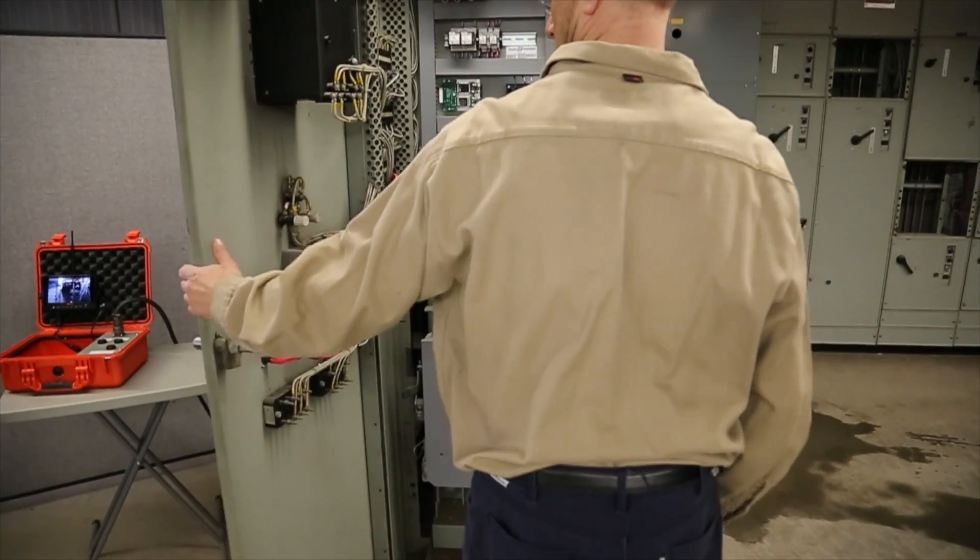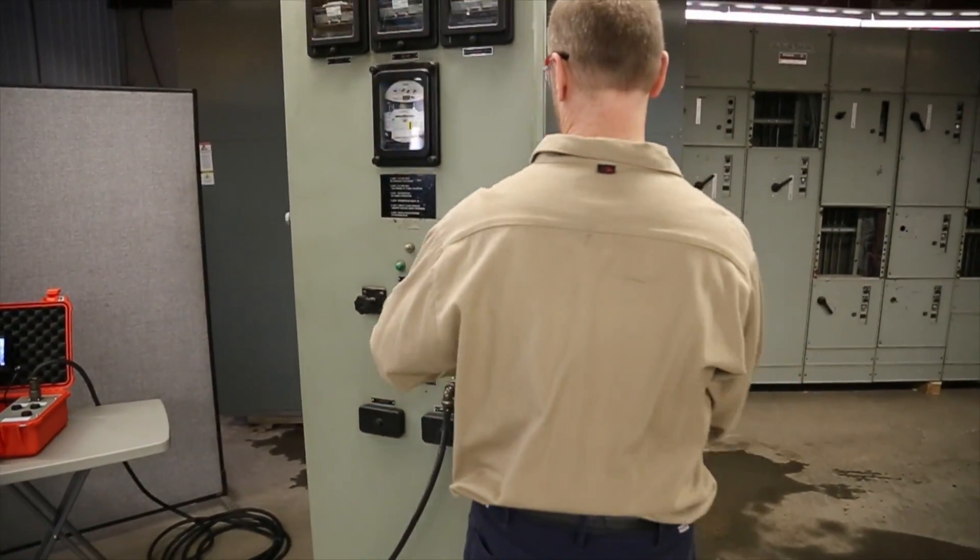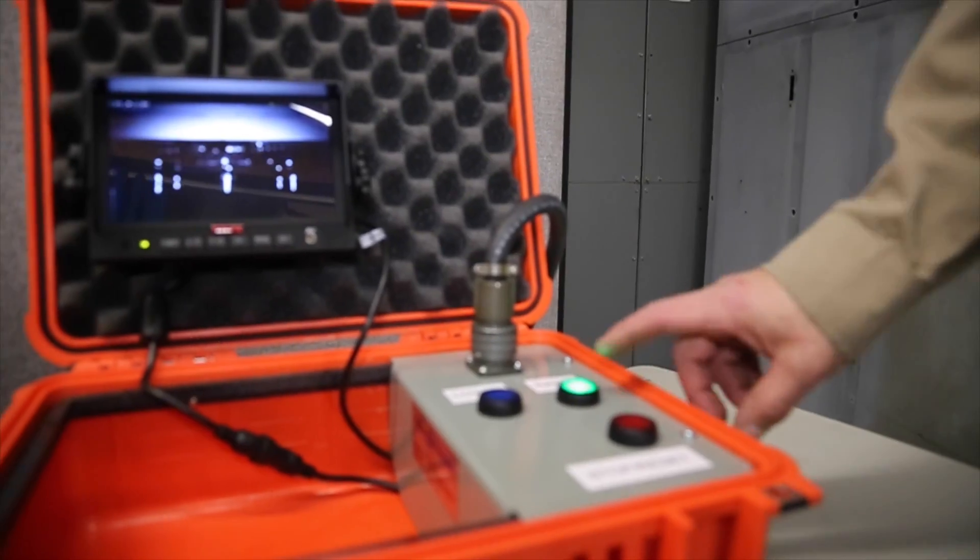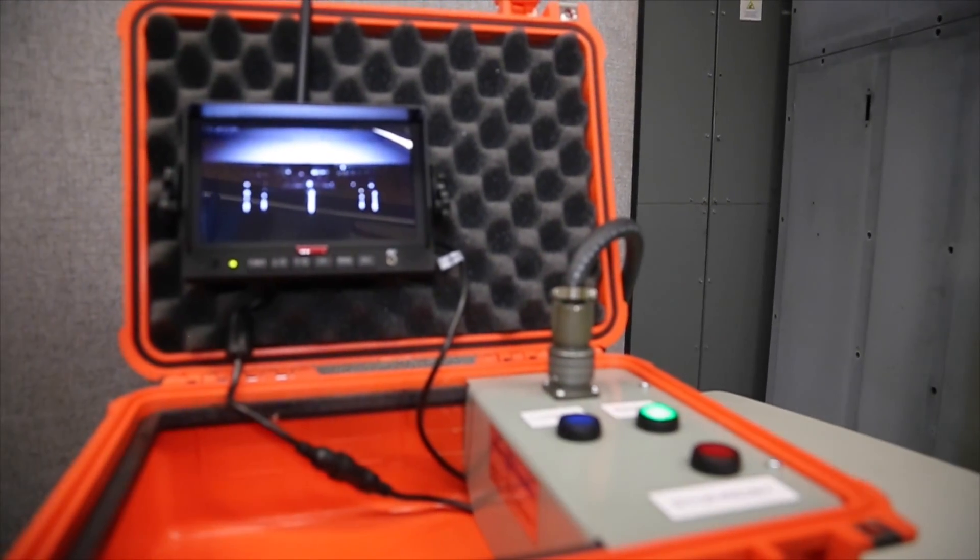If okay, close the breaker door. Return to control panel and resume the lift by pressing the raise button. Watch the operation on the monitor and be prepared to press the stop button if necessary.